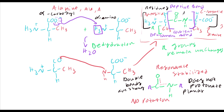Because the peptide bond cannot rotate, what can rotate? What can rotate are the alpha carbons — they don't have any double bonds, so those carbons can actually rotate. But even though they can rotate, they're going to be hindered. They can't rotate all willy-nilly — they're actually limited by sterics. You don't want to rotate into a position with more energy; you want the position with the least amount of steric hindrance.